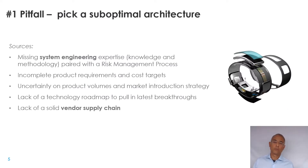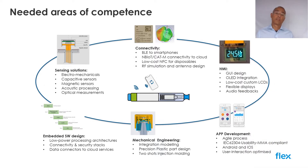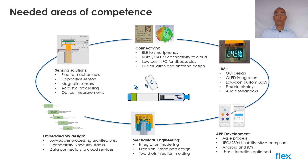Pitfall number one: do not focus on the system architecture of your product. It's important to have a system engineering team connecting the hardware, software, mechanical, and user experience design teams together — to understand at the beginning what the product requirements are, the associated risks, and how to manage component selection, pairing them with the right supply base to ensure a complete transition to manufacturing. You need to bring several subject matter experts to the table, covering sensor technology, connectivity, software for local data processing, and mechanical design with full tolerance and manufacturing considerations.